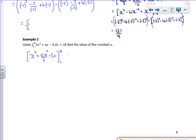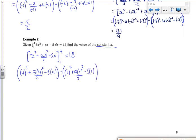And then minus 5x. All that between 1 and 4. And I finish off and gives me a value of 18. That's what it's saying. And I'm going to use it to find a. So I put my limits in. So I put my upper limit in. I've got 4 cubed. Plus a times 4 squared over 2. Minus 5 lots of 4. Then put 1 in. So I've got 1 cubed. A times 1 squared over 2. Minus 5 lots of 1.